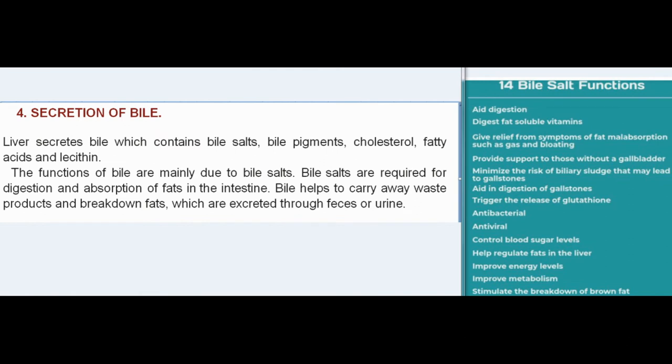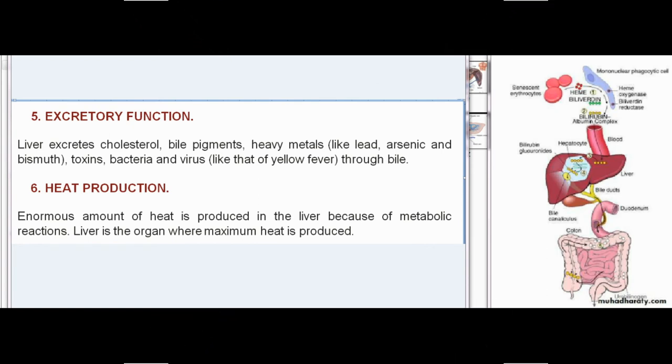Secretion of bile: the liver secretes bile containing bile salts, bile pigments, cholesterol, fatty acids, and lecithin. Bile functions are mainly due to bile salts, which are required for digestion and absorption of fats. Excretory function: the liver excretes cholesterol, bile pigments, heavy metals like lead, arsenic, and bismuth, toxins, and bacteria and viruses like that of yellow fever, through bile.